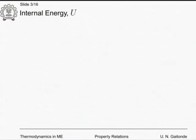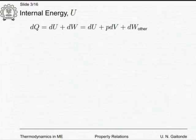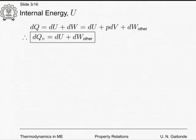Now we start playing with our energy functions. The internal energy U is related to dQ and dW by the first law: dQ = dU + P dV + dW_other. If I consider a constant volume process for which P dV = 0, then dQ at constant volume equals dU + dW_other. Nothing special here — this is all known.